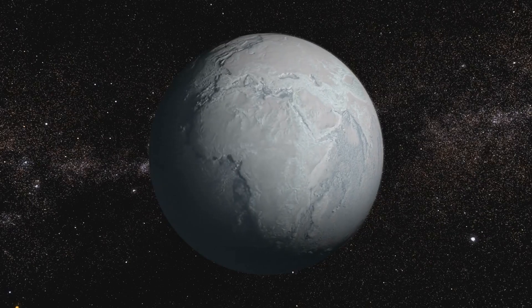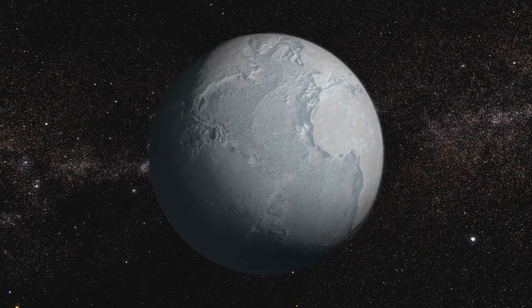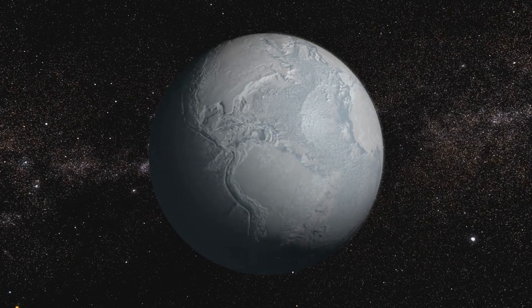Additionally, the composition of HD 40307 G's atmosphere is unknown, and it is possible that the planet lacks the necessary elements for life as we know it.